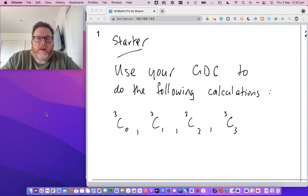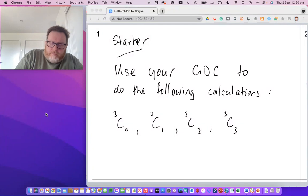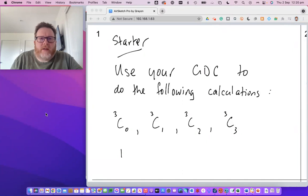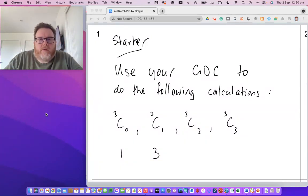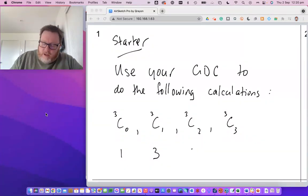Okay, I'm really hoping that you did that. What did you get? Did you notice anything about them? So 3C0 is giving you 1, which kind of makes sense. I'm choosing none from 3, there's only one way of doing that, it's to choose nothing. 3C1 gives me 3. Okay, so if I've got 3 items and I'm choosing one of them, I would choose that one, that one or that one, so that kind of makes sense anyway.